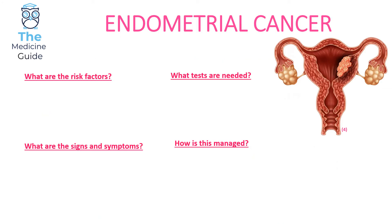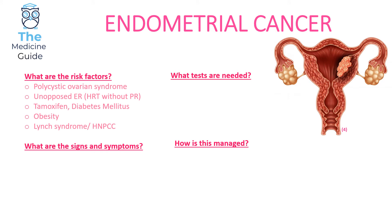Endometrial cancer involves the endometrium, which is the lining of the uterus. Risk factors include polycystic ovarian syndrome, unopposed oestrogen — that's the situation where a woman is receiving HRT but with no progesterone component — tamoxifen, diabetes mellitus, obesity, and Lynch syndrome, also known as HNPCC — hereditary non-polyposis colorectal cancer. The most important thing to remember is that the endometrium responds to oestrogen, so tamoxifen and unopposed oestrogen are risk factors that really escalate the risk of developing endometrial cancer.